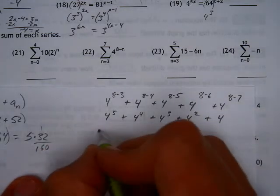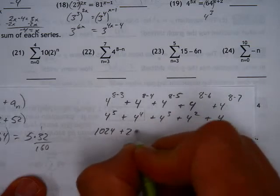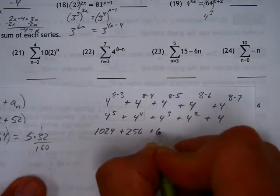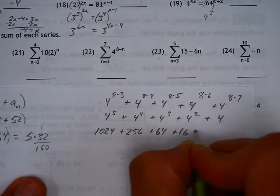This is the biggest one. That's 1,024, 256, 64, 16, and 4.